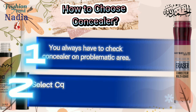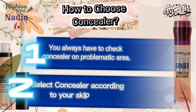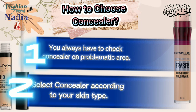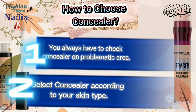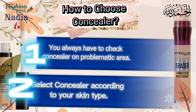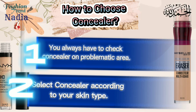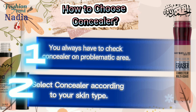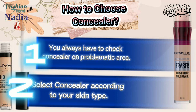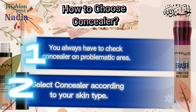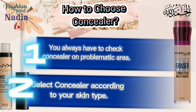Secondly, you should always check the concealer based on your skin type. If you have dry skin, use a liquid concealer — it will spread more easily and is more pigmented. But if you have oily skin, use a creamy concealer or stick concealer. Creamy and stick concealers are comparatively more matte and longer-lasting, but they can be problematic for dry skin.